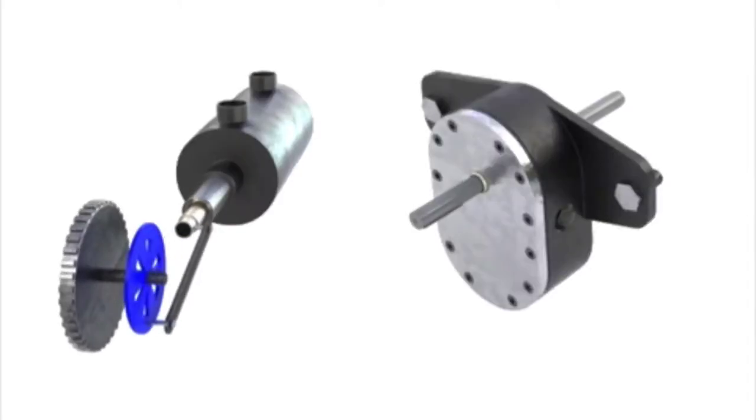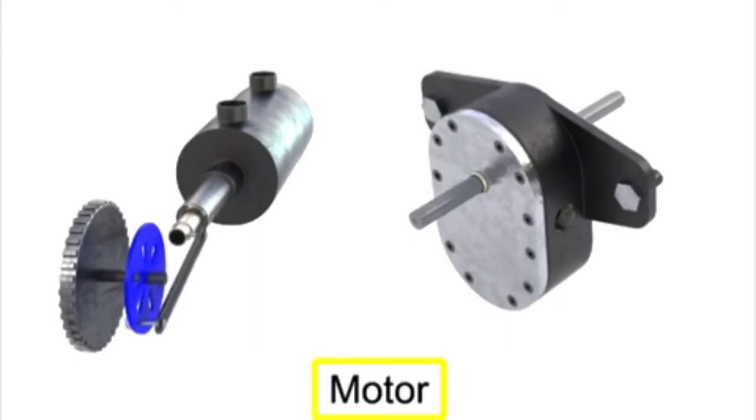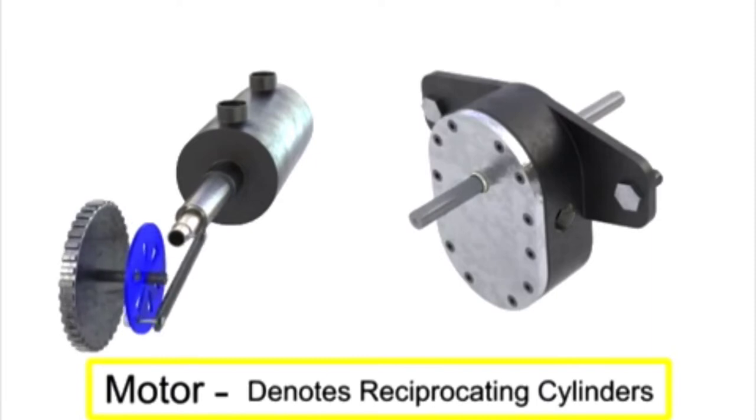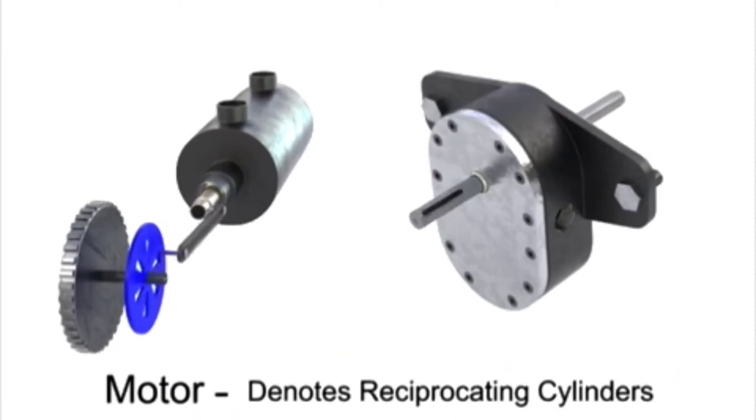The term fluid motor is normally used to identify devices which deliver continuous rotary power output when supplied with fluid under pressure. The term motor is sometimes used by manufacturers to denote reciprocating cylinders. Technically, this is correct usage but can lead to misunderstanding of the type of actuator to be used.